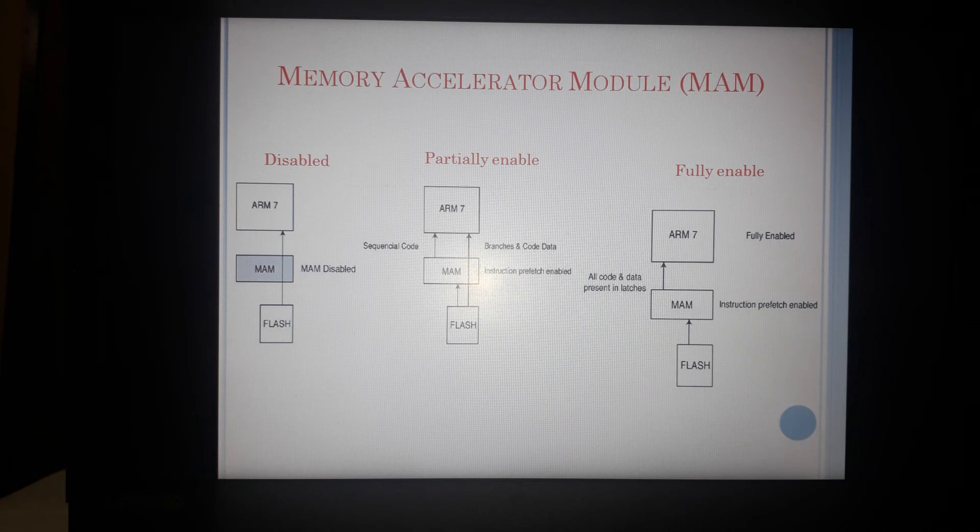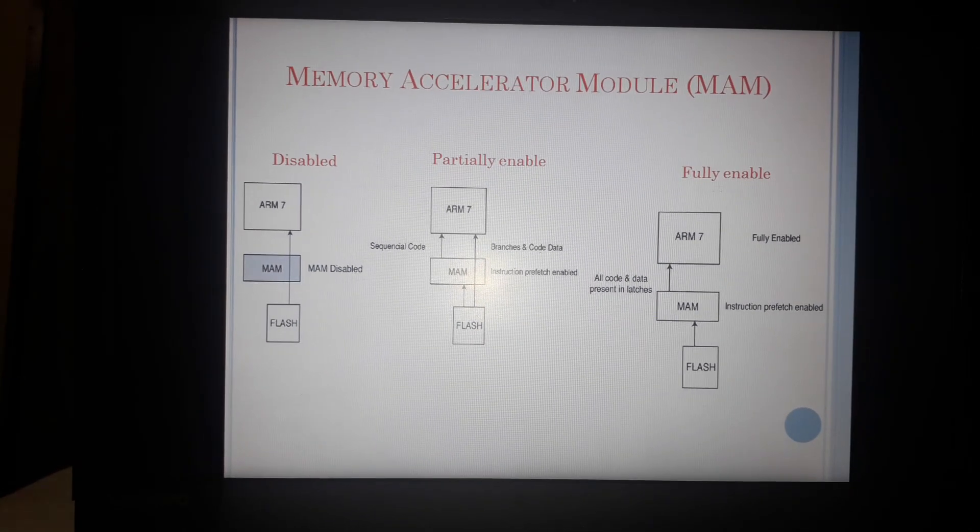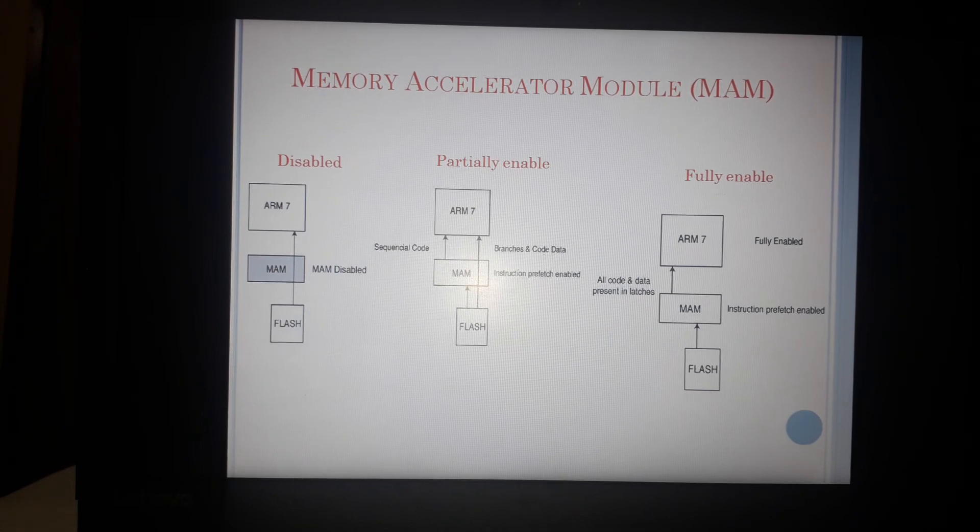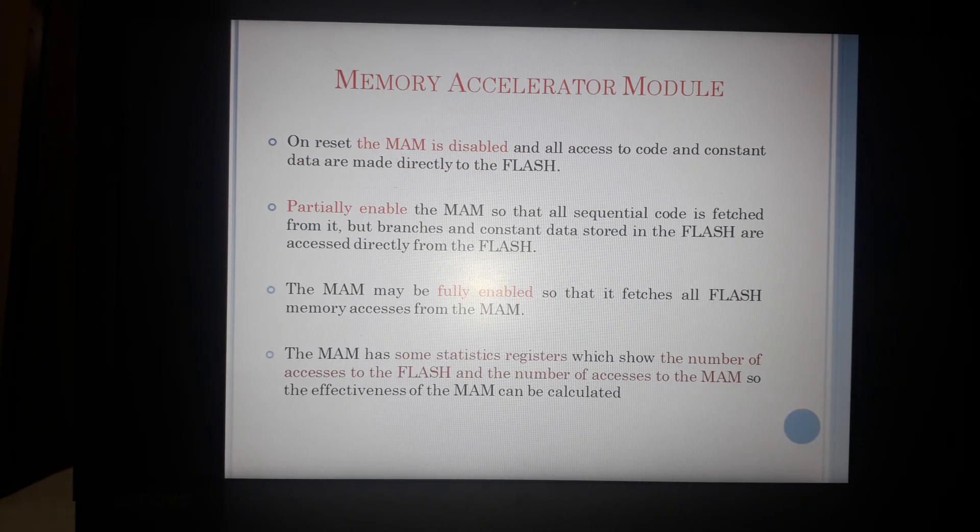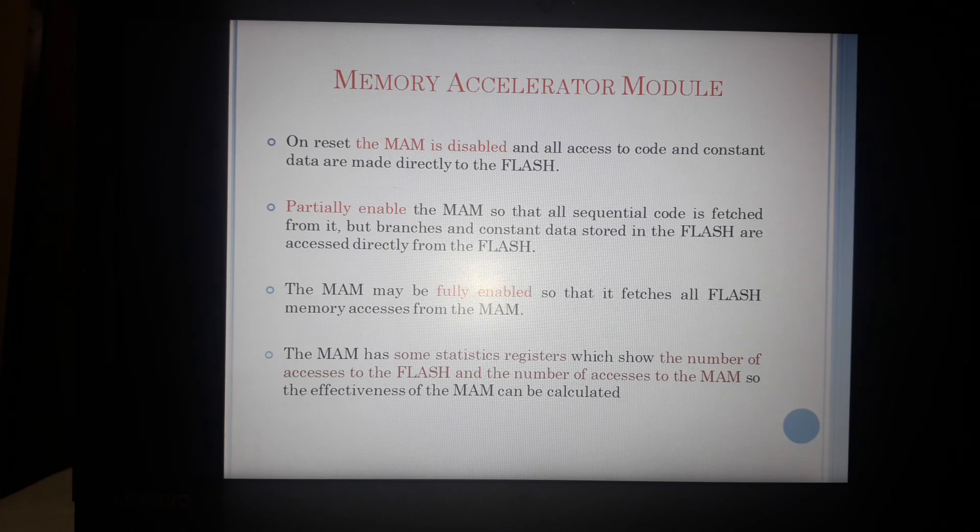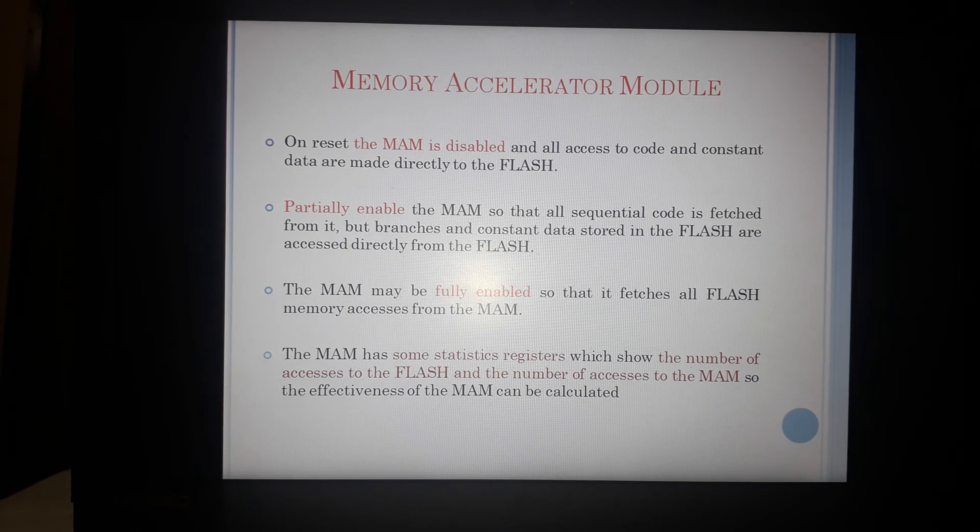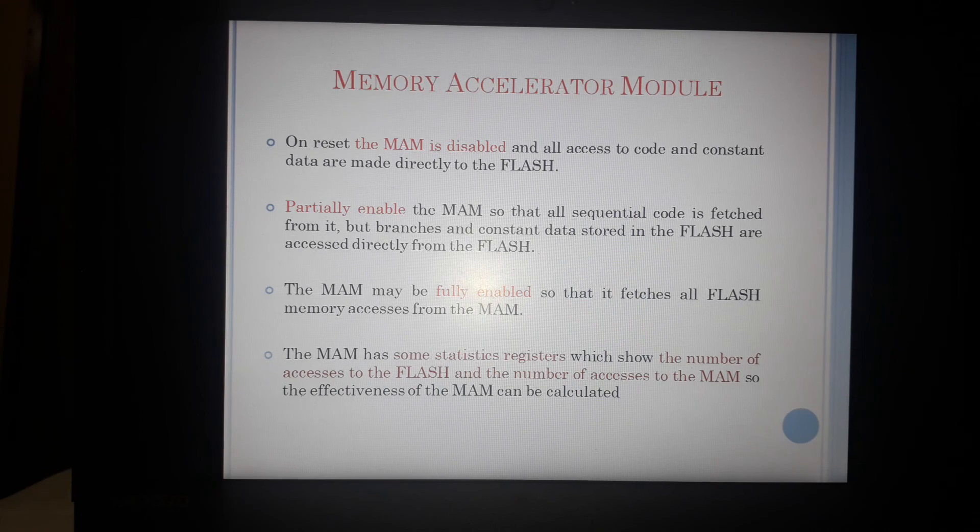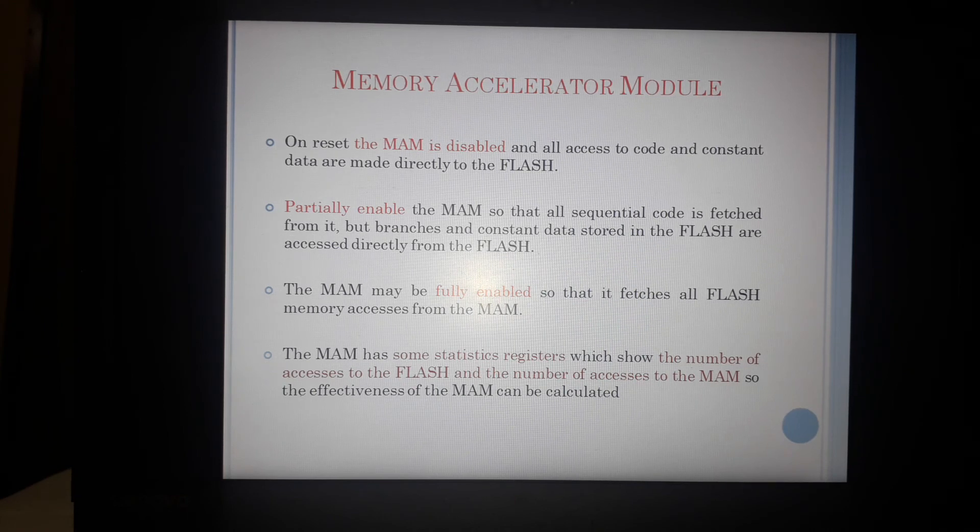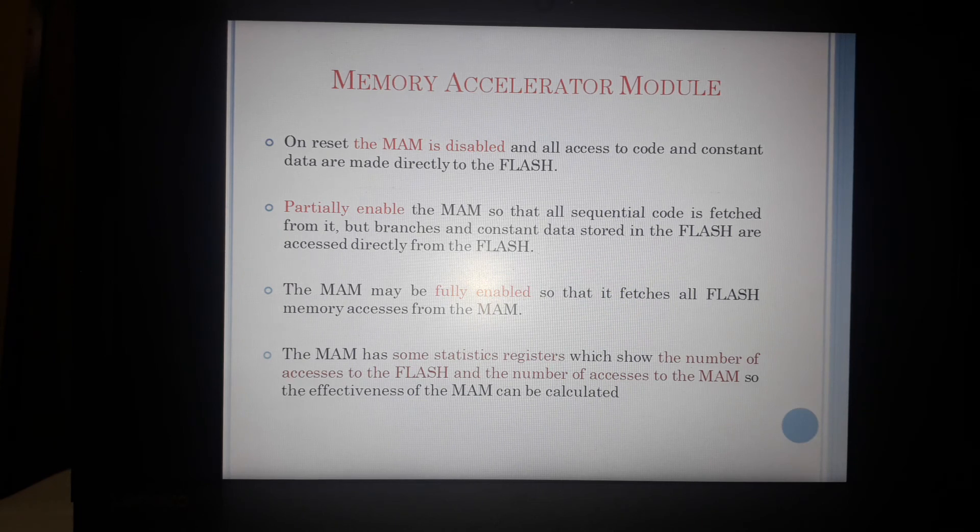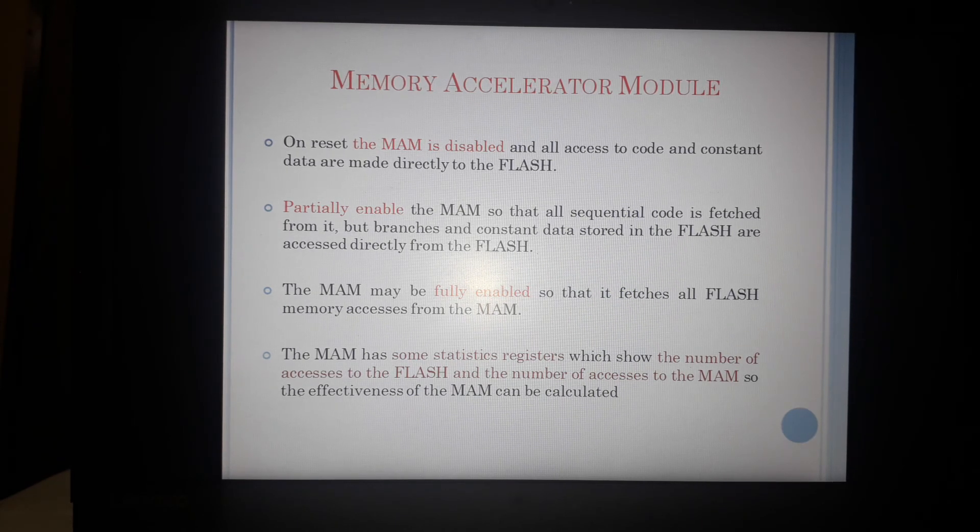The last mode is fully enabled mode. In case of that all my data and code including the branches, loops, they are accessing the memory through MAM only. Obviously partially enabled and fully enabled they give me the better speed and better performance as compared to the disabled mode.